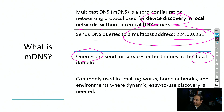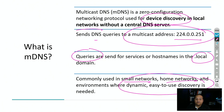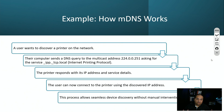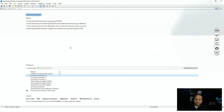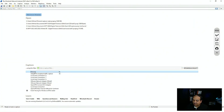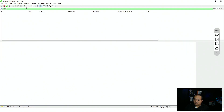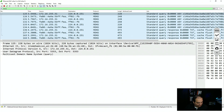mDNS is commonly used in small networks, home networks, and environments where dynamic, easy-to-use discovery mechanisms are required. Now let's go to the action. Let's start capturing traffic with Wireshark and try to find a printer in our local area network. I'll start capturing traffic on the network interface and filter it to show only mDNS traffic.